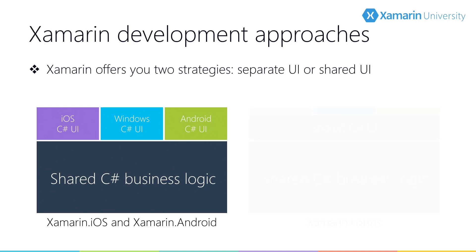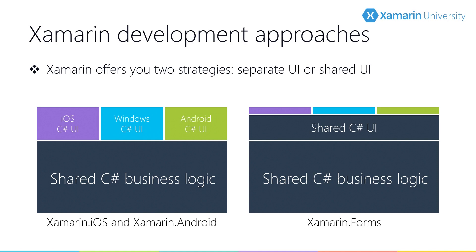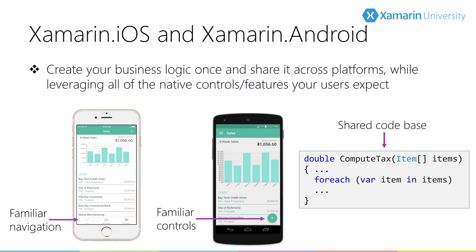There is another option. Xamarin Forms allows for even more code sharing in the form of a shared UI definition. With Xamarin Forms, you define your UI once, and that UI definition is then used to create the appropriate native controls on each platform. Xamarin iOS and Xamarin Android allow you to write iOS and Android applications in C#, leveraging all of the same features available to developers using Swift or Java, but with the advantage of being able to share and reuse code between your iOS and Android applications.